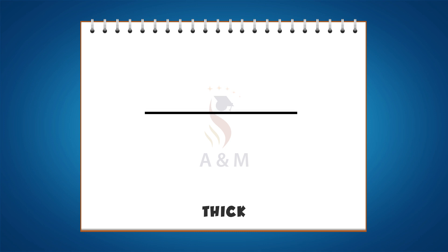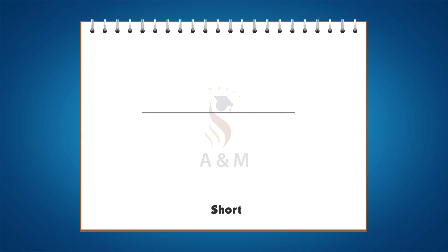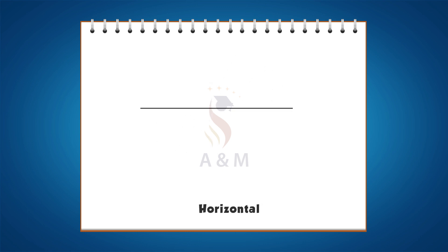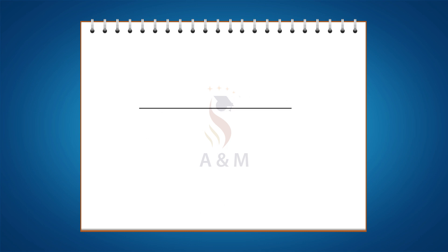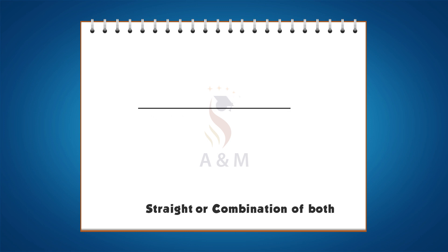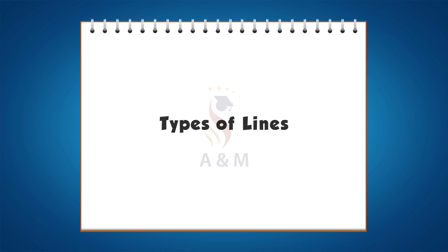Lines can be thick or thin. They can be long or short. They can be vertical, horizontal, or diagonal. They can be solid, dotted, or dashed. Lines can be curved or straight, or a combination of both. There are several types of lines defined by their use.